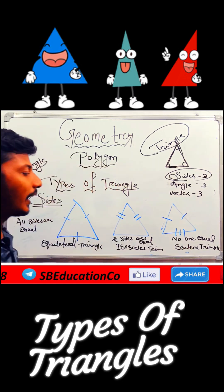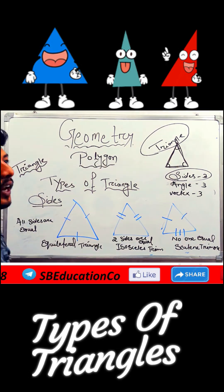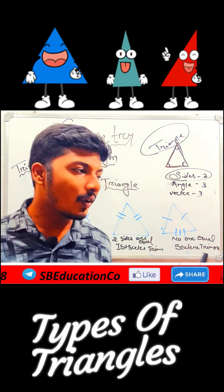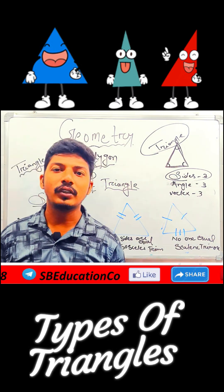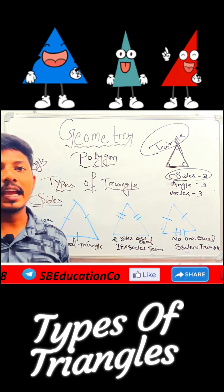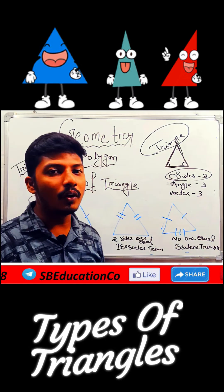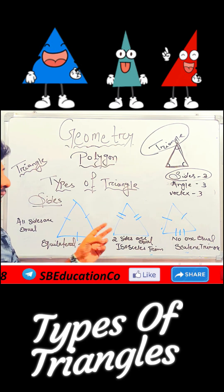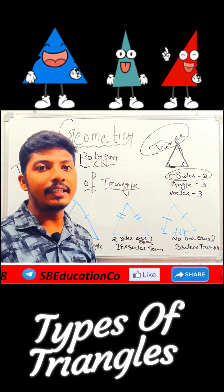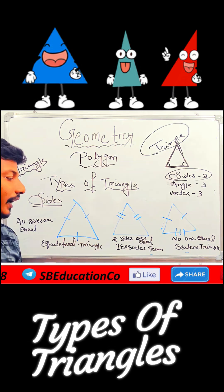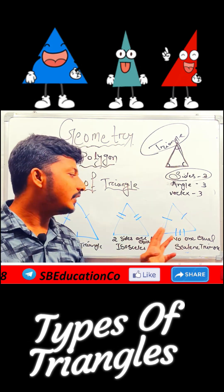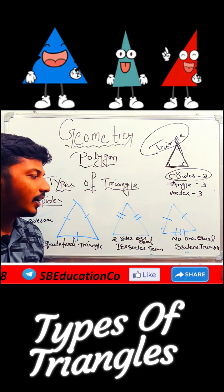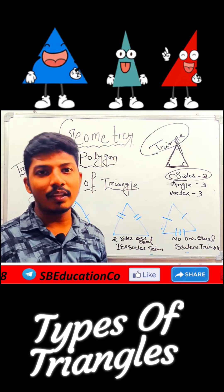According to the sides of a triangle, we have three types: one is equilateral triangle, another is isosceles triangle, and the last one is scalene triangle. Equilateral triangle means when three sides are equal. Isosceles triangle means when two sides are equal and one is not. Scalene triangle means when no sides are equal.